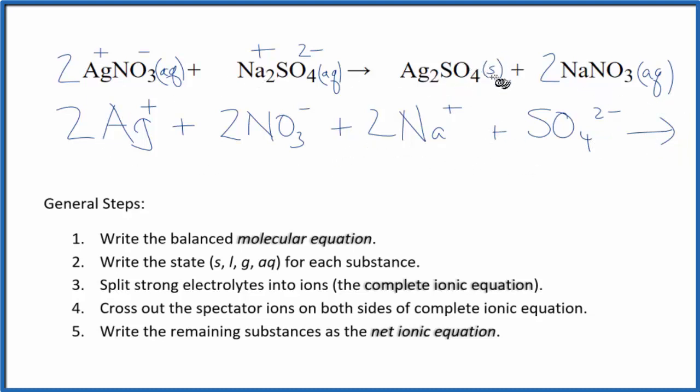For the products, we have a solid here for the silver sulfate. We do not split solids apart when we do net ionic equations. So we're going to put Ag2SO4, that's our silver sulfate. And then we said sodium was positive, nitrate ion, that's negative. Two sodium ions and two nitrate ions. So this is our complete ionic equation.